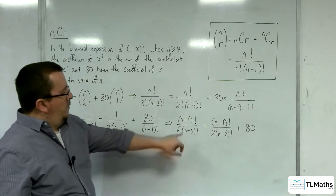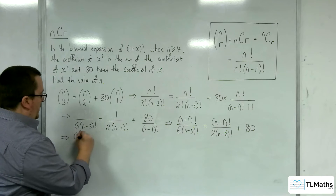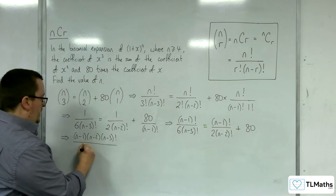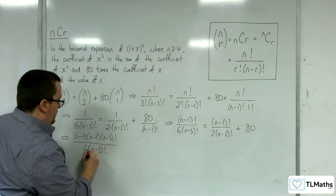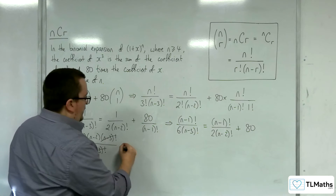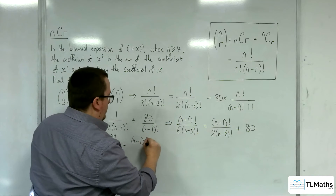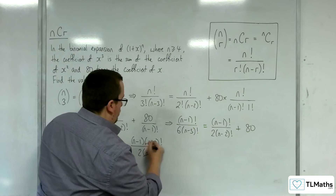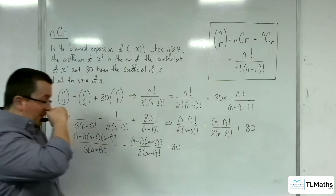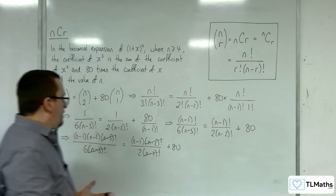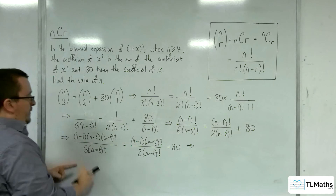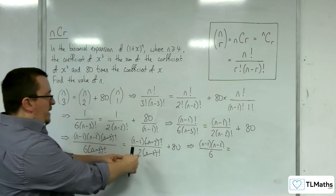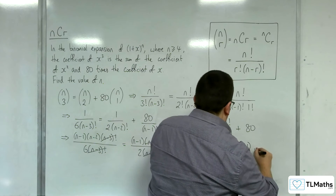Now, (n-1) factorial is (n-1)(n-2)(n-3)(n-4)... and so on. So I can write it like that, enabling me to cancel the (n-3) factorial from top and bottom. And that equals (n-1) factorial, which is (n-1)(n-2) factorial, over 2(n-2) factorial. The (n-2) factorials cancel, plus 80. I've now got rid of all the factorials. So I've got (n-1)(n-2) over 6, equals (n-1) over 2, plus 80.